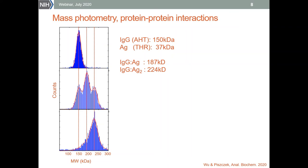We can see three peaks: the 150 kilodalton peak representing the free antibody, the peak for the one-to-one complex in the middle, and the high molecular mass peak for the two-to-one complex. In the sample with the higher antigen concentration, the antibody is almost completely saturated and the distribution shifts into the high molecular mass peak.